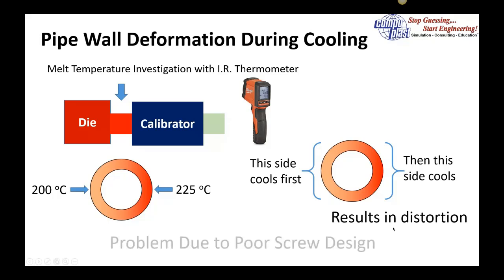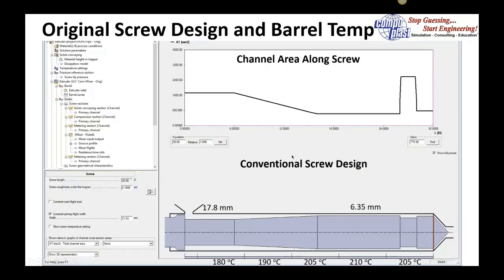The problem is due to poor screw design or operating the screw at a condition it wasn't designed for. Here's a screenshot from our simulation of the original conventional screw design: 17.8 mm deep feed section and 6.35 mm deep metering section with a mixer. The barrel temperature profile maximum value was 210 degrees C. Their comment was, how could the IR gun indicate 225? They didn't believe the thermometer worked well, but they didn't realize the amount of viscous heating that can be generated inside the screw.